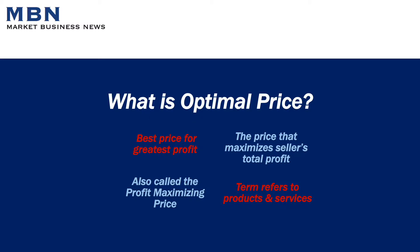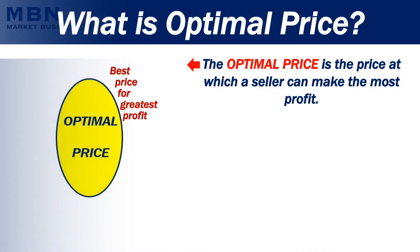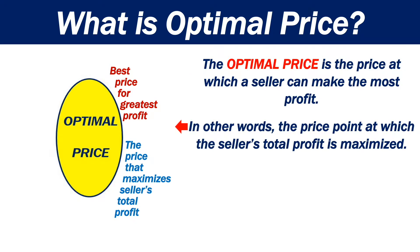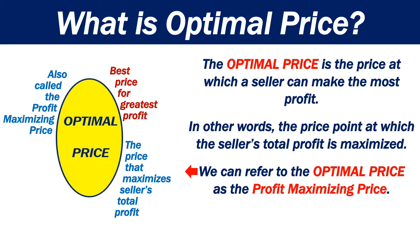What is optimal price? The optimal price is the price at which a seller can make the most profit. In other words, the price point at which the seller's total profit is maximized. We can refer to the optimal price as the profit-maximizing price.